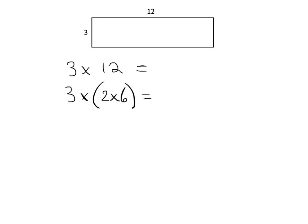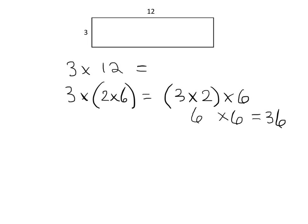Now that we know these two should have the same product, we can use the associative property to change the multiplication expression to 3 times 2 times 6, which gives us 6 times 6. So now we know the answer is 36. We definitely know the answer is 36, and we have two ways to show that 3 times 12 is 36.